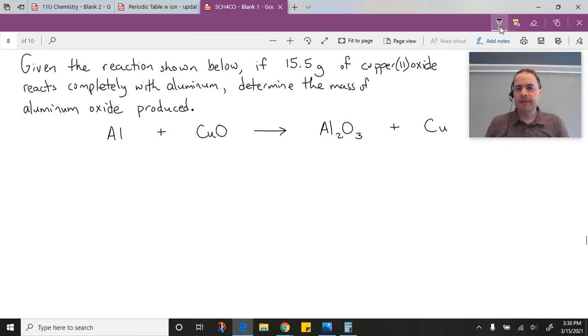Remember that in any stoichiometry problem, the first thing we always want to do is balance our chemical equation. So if I balance this, I need 3 oxygens, so I need a 3 there to balance the coppers, and then I can put a 2 in front of aluminum to get the balanced chemical equation.